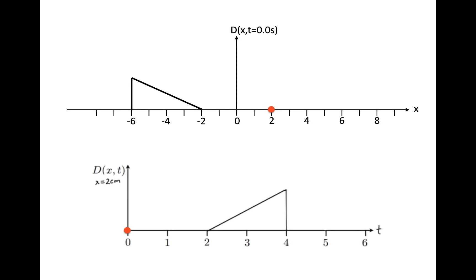One of the hardest things to do is, given a history graph, to think of what the snapshot graph looks like. A lot of plotting these graphs has to do with being able to think of a pulse or some waveform and how it moves through space, and then plot how it moves through space.